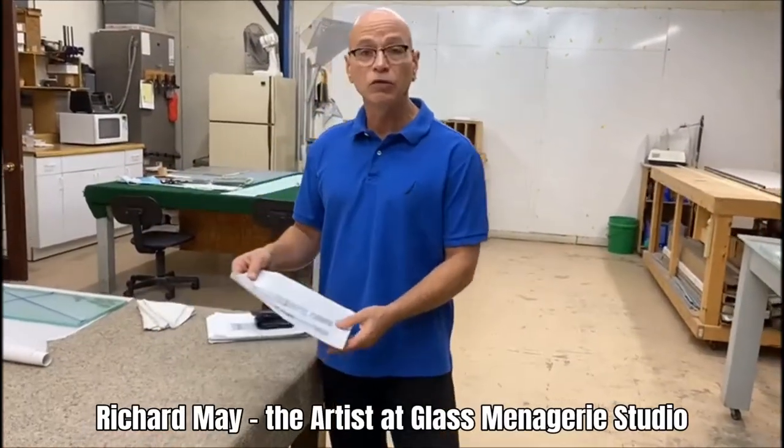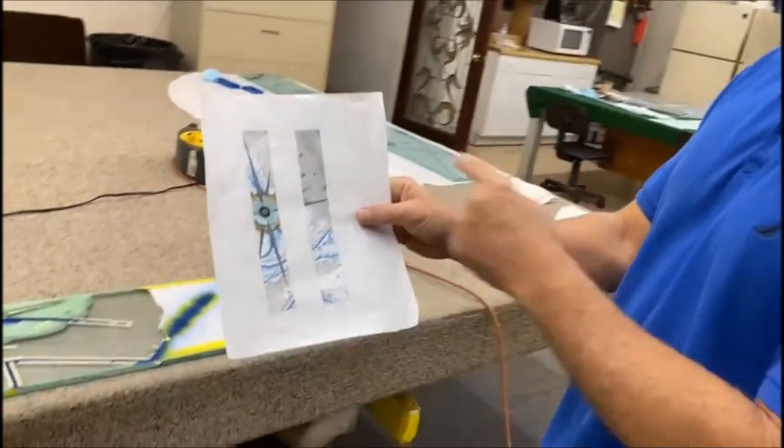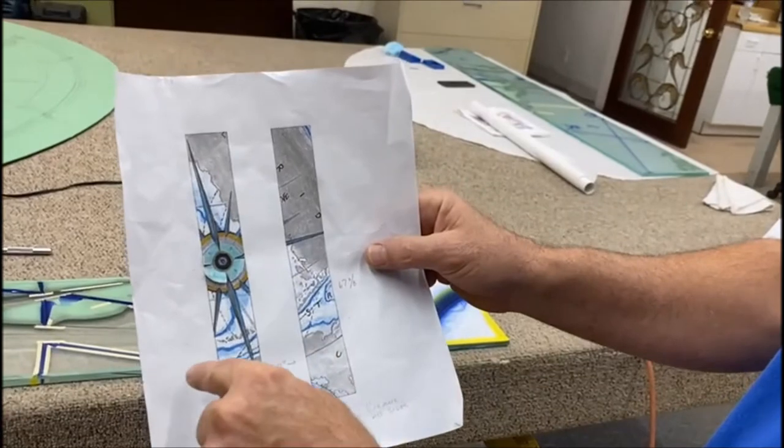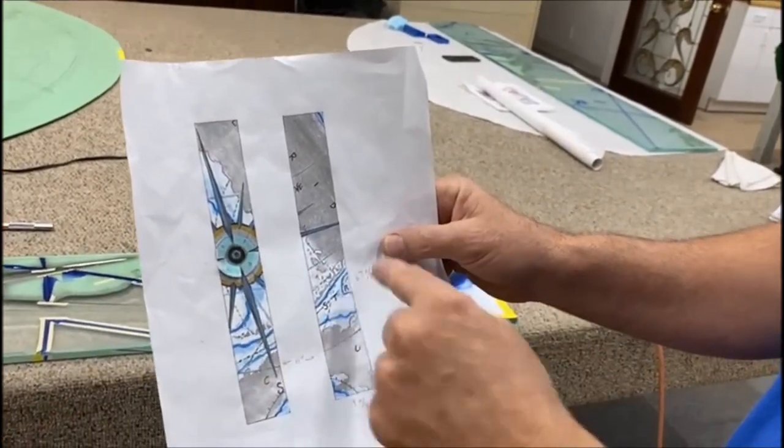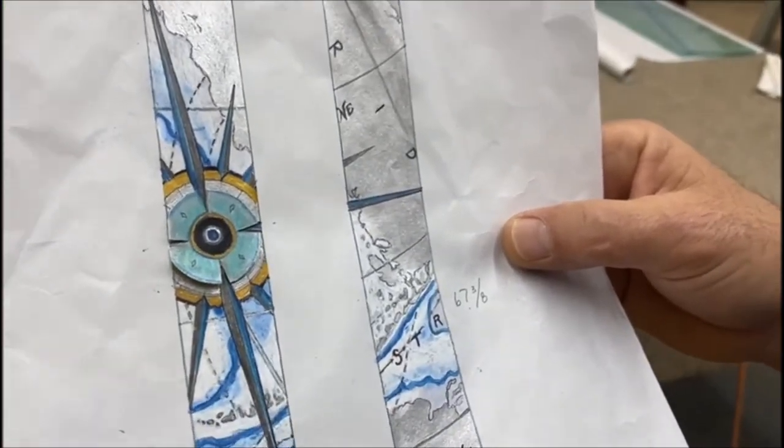This is the drawing that was approved by the customer of the pair of doors. It's a compass rose with Florida, Cuba, and the Straits. This is the Gulf. So this is the drawing that was approved.